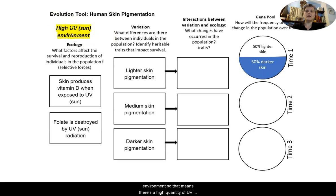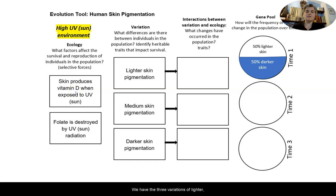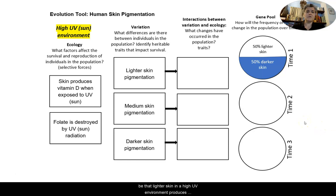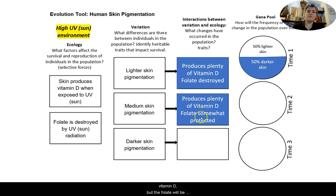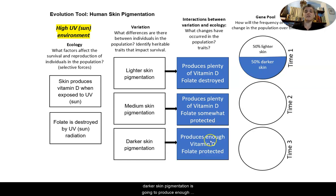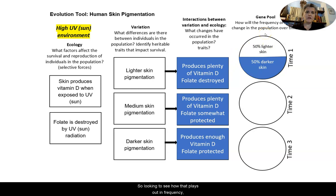Our ecology here involves a high UV environment, meaning there's a high quantity of UV radiation. The factors affecting survival and reproduction have been pre-filled: skin produces vitamin D when exposed to UV, and folate is destroyed. We have three variations — lighter, medium, and darker skin pigmentation. In a high UV environment, lighter skin produces plenty of vitamin D but folate is destroyed. Medium skin produces plenty of vitamin D and folate is somewhat protected. Darker skin produces enough vitamin D and folate is protected.